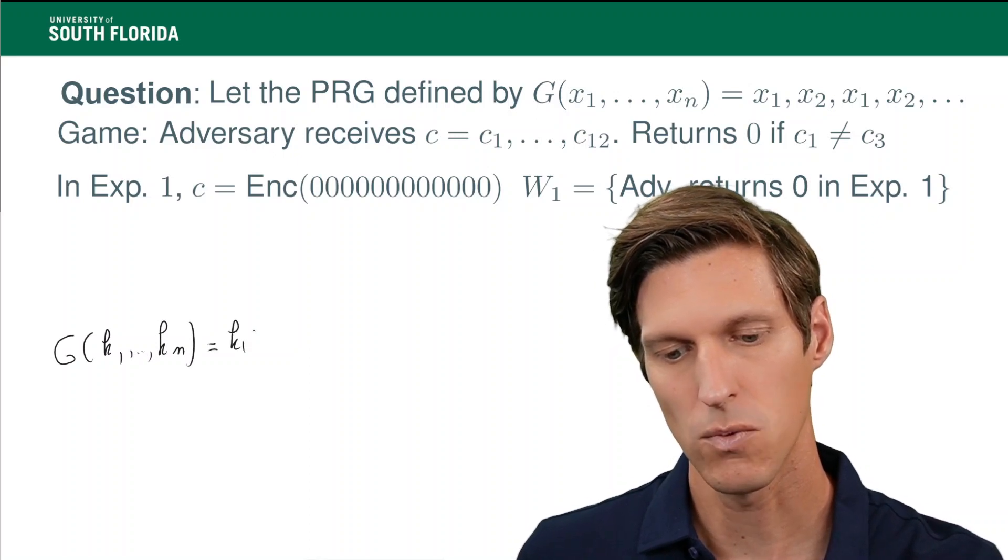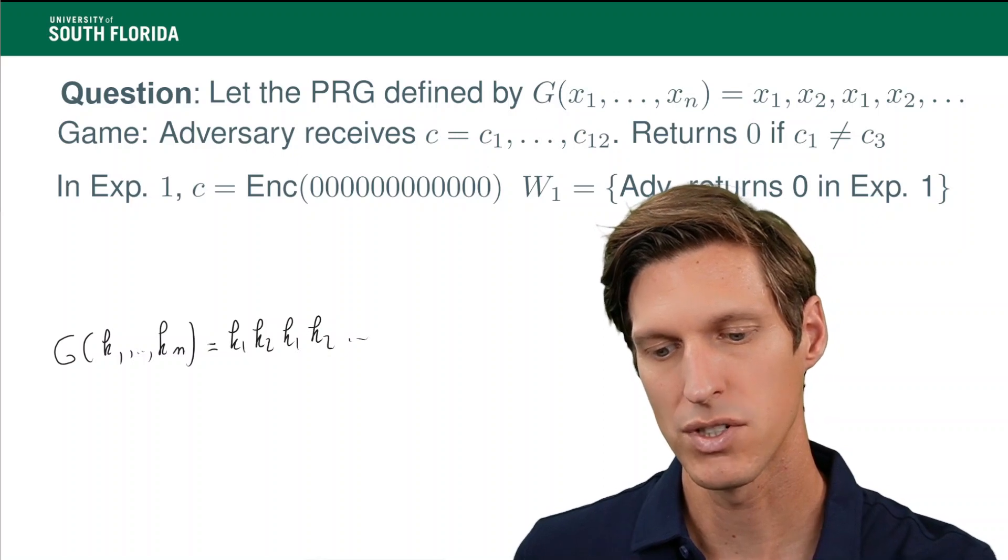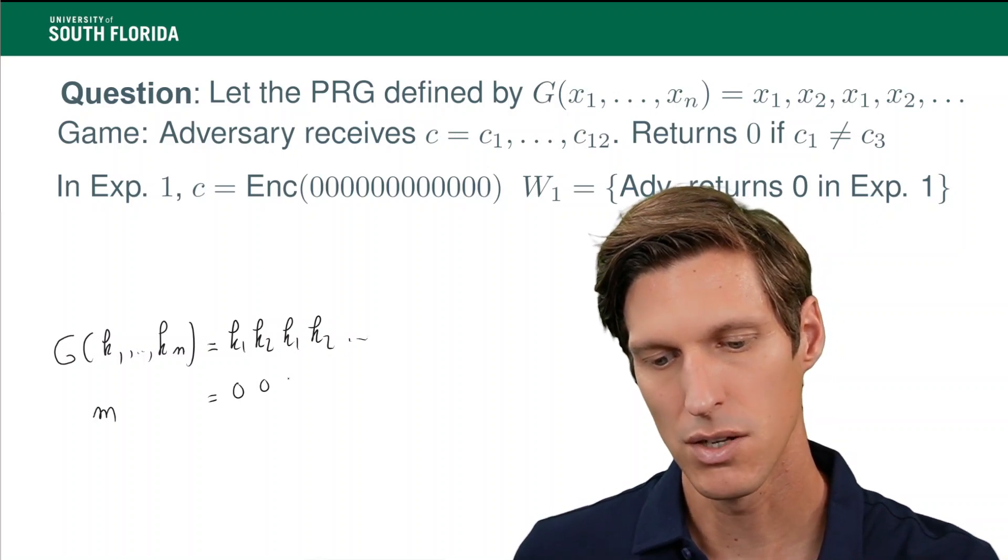So my keystream is still k1, k2, k1, k2, etc. The message now is different in that experiment. It's the all-zero message.